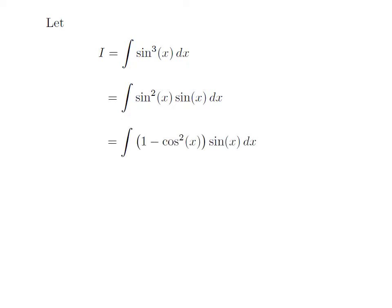As per the famous trigonometric identity, sin²(x) is equal to 1 minus cos²(x), so i is equal to the integration of (1 - cos²(x)) · sin(x) with respect to x.